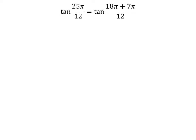25 times pi is equal to 18 times pi plus 7 times pi. So, tangent of 25 times pi upon 12 is equal to tangent of 18 times pi plus 7 times pi upon 12.